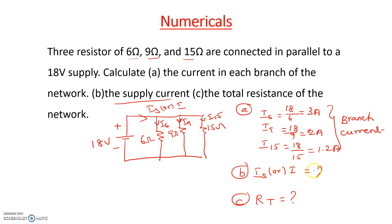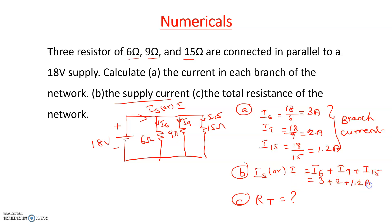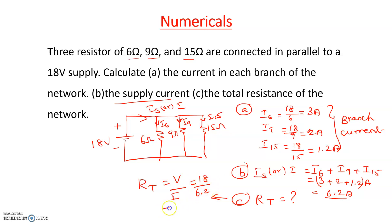The total current or source current equals I6 plus I9 plus I15, which is 3 plus 2 plus 1.2, giving 6.2 amperes. The equivalent resistance RT equals supply voltage divided by total current: 18 divided by 6.2, which equals approximately 2.9 ohms.